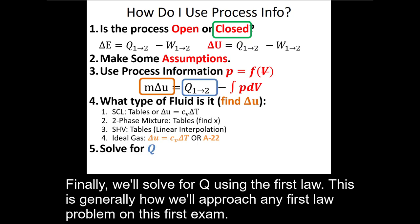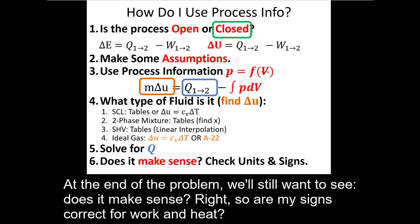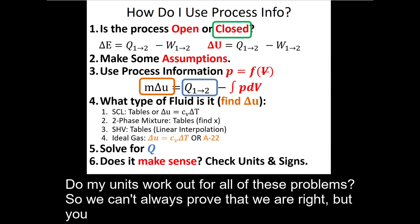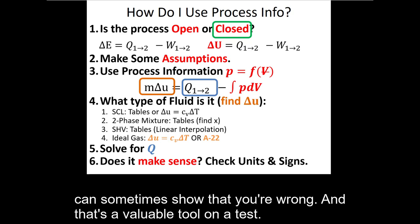Finally, we'll solve for Q using the first law. This is generally how we'll approach any first law problem on this first exam. At the end of the problem, we'll still want to see: does it make sense? Are my signs correct for work and heat? Do my units work out? We can't always prove that we're right, but you can sometimes show that you're wrong, and that's a valuable tool on a test.